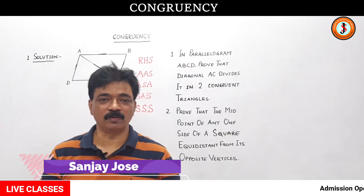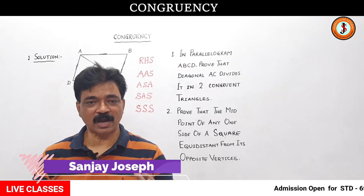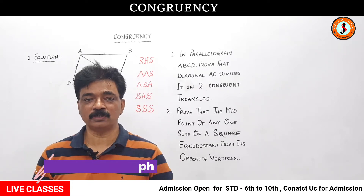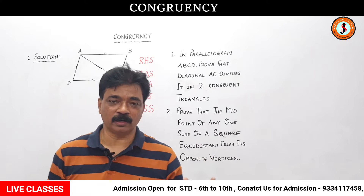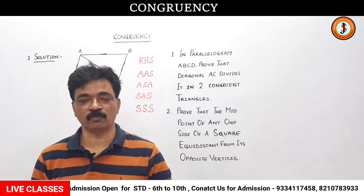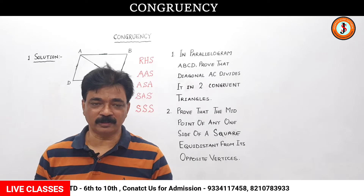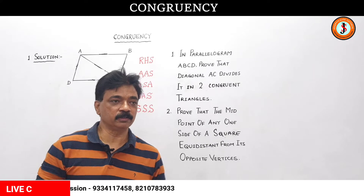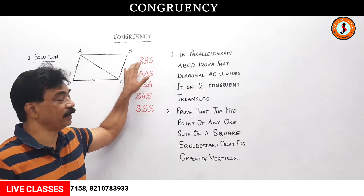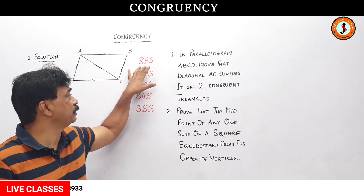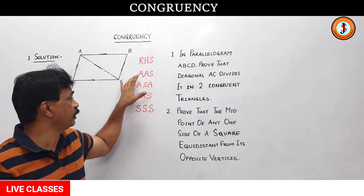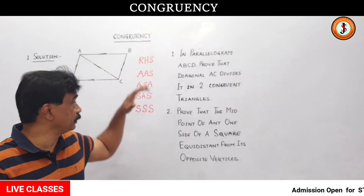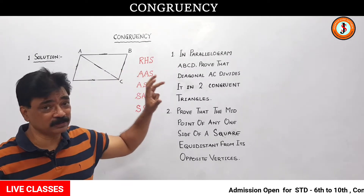Hello students, let us do some problems of congruency. We are just starting congruency, so you should look at my first two videos on congruency to understand how we can solve congruency problems — that is, the criteria for two triangles to be congruent. I have explained them well there, but in this video I will also tell you. There are five criteria in abbreviated form: RHS, that is right angle, hypotenuse, and side.